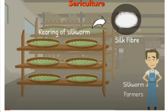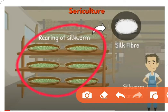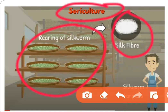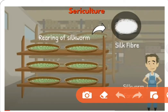The rearing of silkworms to obtain silk fiber is called sericulture. The people who practice it are called silkworm farmers.